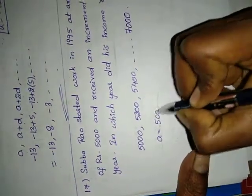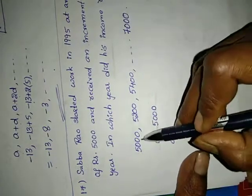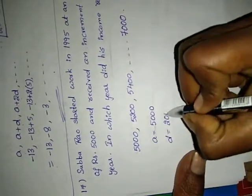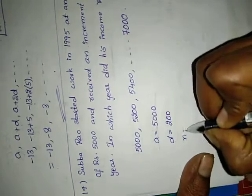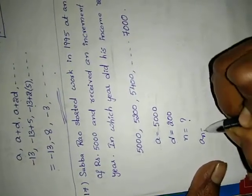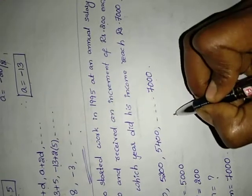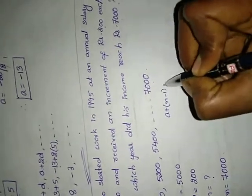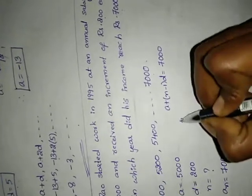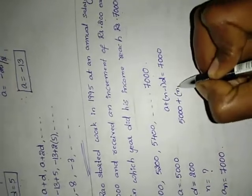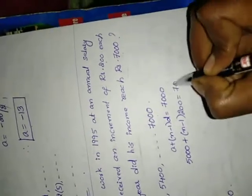So A equals 5000, D equals 5200 minus 5000 equals 200. We have to find n such that A_n equals 7000. Using the formula A plus (n minus 1) into D equals 7000: 5000 plus (n minus 1) into 200 equals 7000.